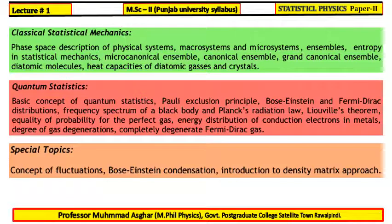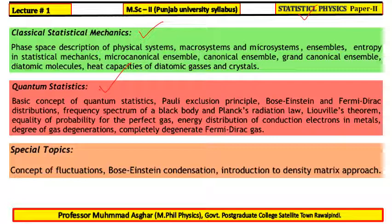As I said earlier, I will teach you Paper 2, which is Statistical Physics. This Statistical Physics course contains an outline according to the University of Punjab. We will study Chapter 1: Classical Statistical Mechanics, Chapter 2: Quantum Statistics, and Chapter 3: Special Topics.